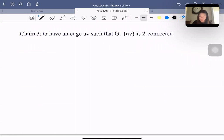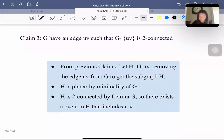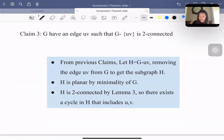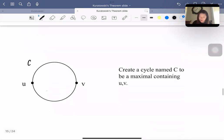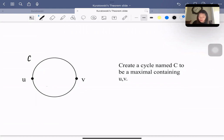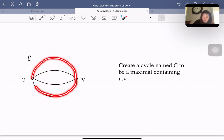Claim 3: G has an edge uv such that G minus {uv} is 2-connected. So from the previous claims, we removed edge uv from G to get the subgraph H. And H is planar due to the minimality of G. And H is 2-connected by Lemma 3. So there is a cycle in H including u, v. So now we form a cycle C here. And we want to make sure that cycle C is the maximum loop containing u, v. If we build a path inside cycle C, we can see the region of this cycle is smaller than the region of cycle C.